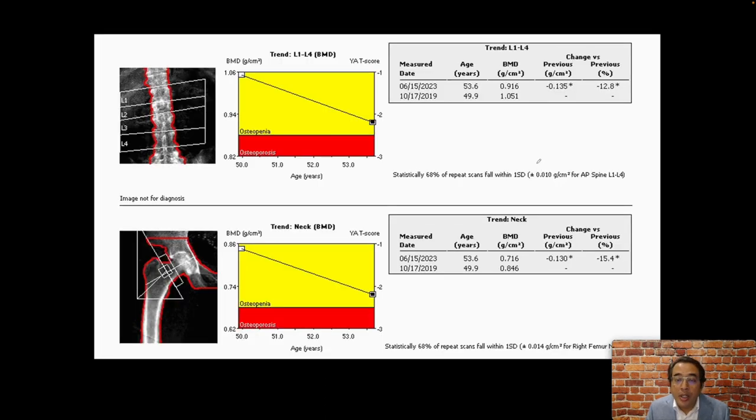All right, switching gears now to talk about some DEXA scan pitfalls. Here is a scan on a patient where we find that compared to their prior study from 2009 in the region of L1 through L4, there has been a 12.8% decrease in the bone mineral density. Similarly, in the region of the right hip in the neck, we find that there is a 15.4% decrease in the bone mineral density when compared to the prior study.